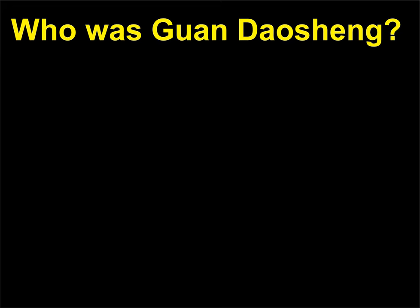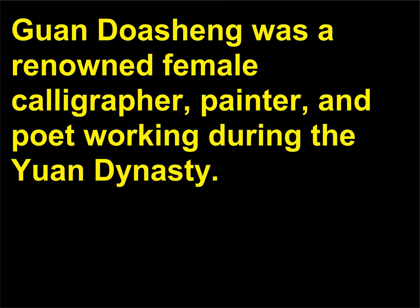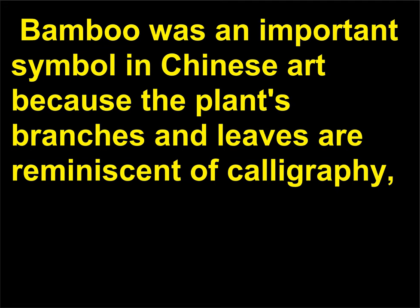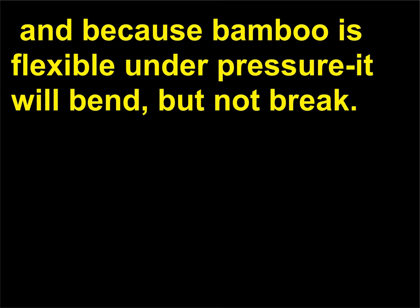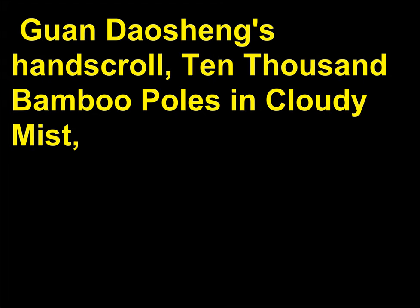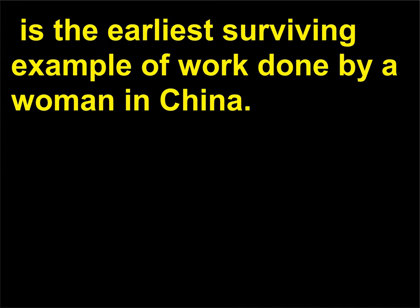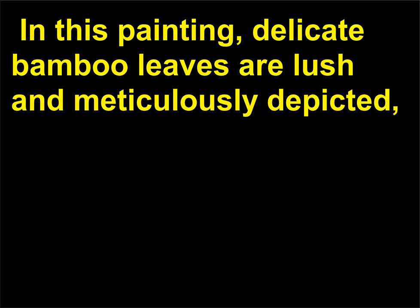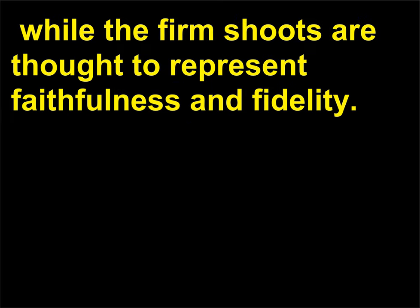Who was Guan Daosheng? Guan Daosheng was a renowned female calligrapher, painter, and poet working during the Yuan Dynasty. She was famous for her paintings of bamboo plants. Bamboo was an important symbol in Chinese art because the plant's branches and leaves are reminiscent of calligraphy, and because bamboo is flexible under pressure — it will bend but not break. Guan Daosheng's hand scroll, 10,000 Bamboo Poles in Cloudy Mist, is the earliest surviving example of work done by a woman in China. In this painting, delicate bamboo leaves are lush and meticulously depicted, while the firm shoots are thought to represent faithfulness and fidelity.